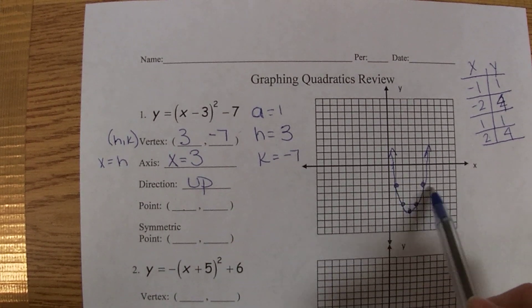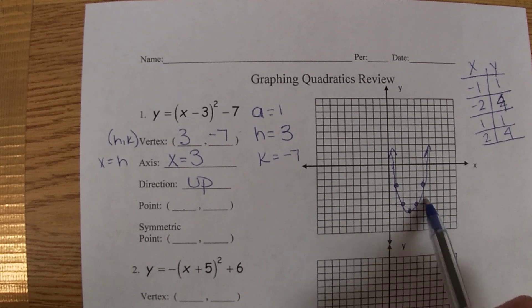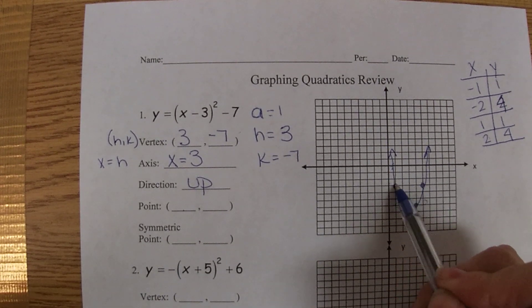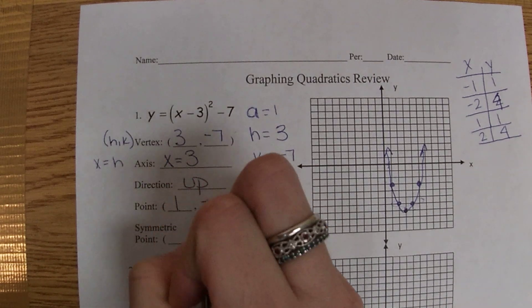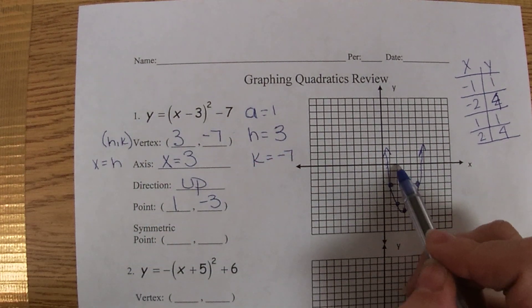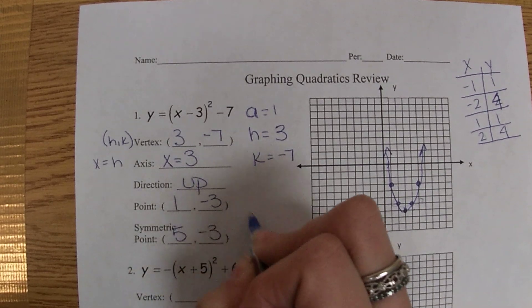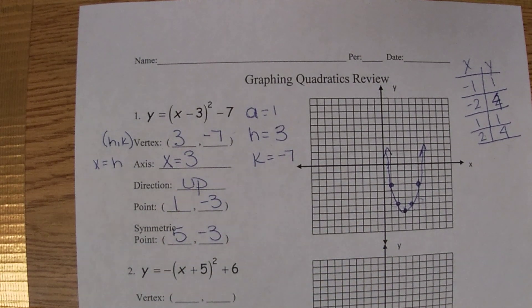And so here is our parabola. Finally, we need to name a point and a symmetric point. You can either choose to name these two points or these two points, as long as they're points that are horizontal to each other. Let's see, this is the point one comma negative three and then five comma negative three. Doesn't matter which point you put first as long as you have a point and its symmetric point.